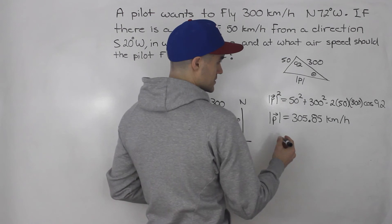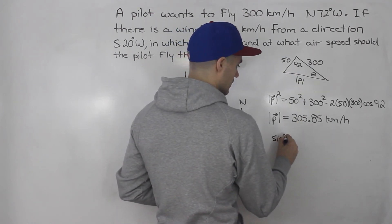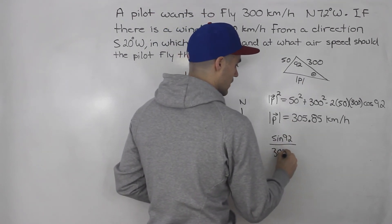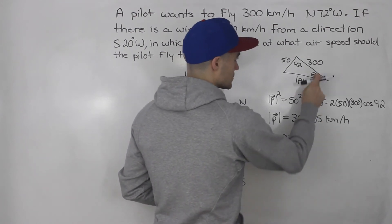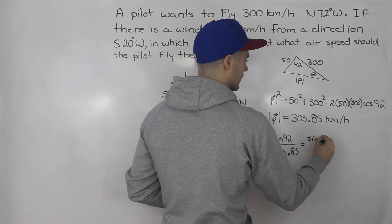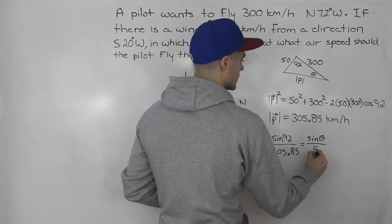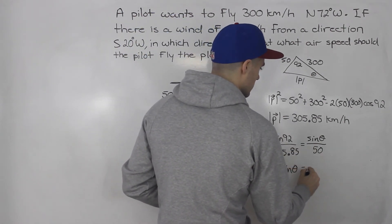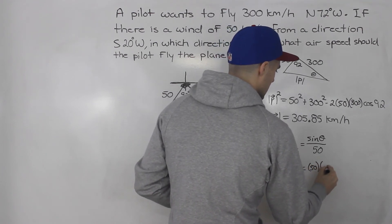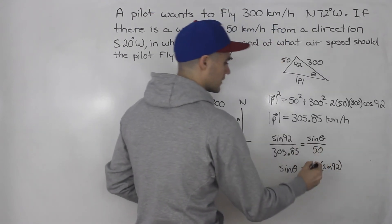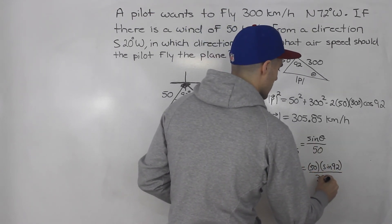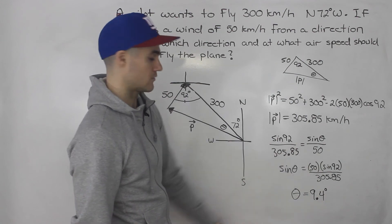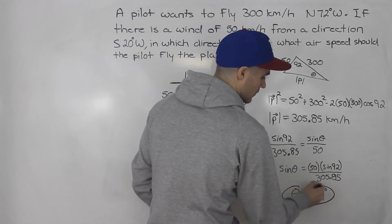Solving for theta, we use the sine law. Sine of 92 over 305.85 equals sine of theta over 50. Cross multiplying and isolating, sine theta equals 50 times sine of 92 divided by 305.85. When you inverse sine that right side, you end up getting 9.4 degrees.